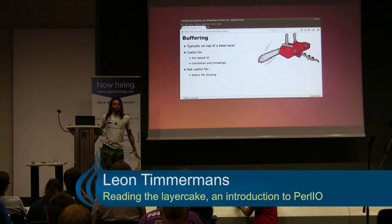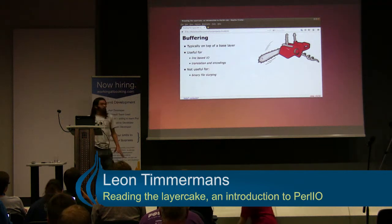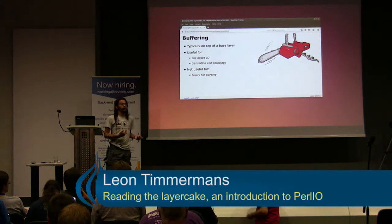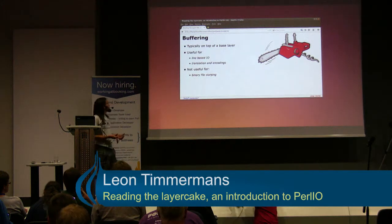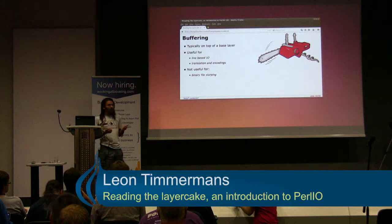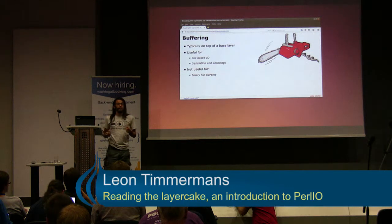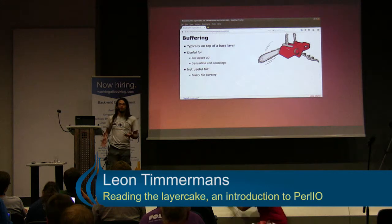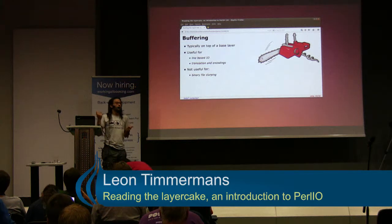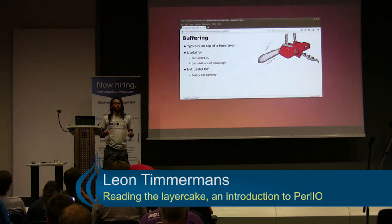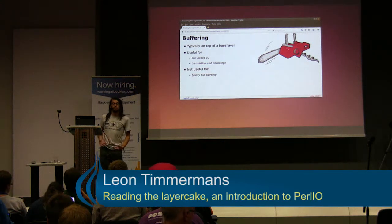On top of the base layers, there's buffering. With buffering, you have to understand why it's useful and why it's sometimes not useful. It's mainly useful for line-based I/O, or anything where you don't know in advance exactly how much you want to read — which also includes encoding and translating stuff. The only thing it's not useful for is bulk binary I/O, because it's overhead — just extra copying of data.